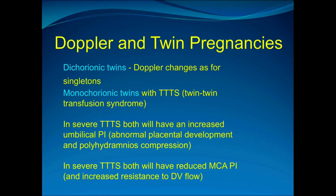In twin pregnancies: with dichorionic twins, the Doppler changes are the same as for singletons, making it a useful tool. With monochorionic twins and twin-to-twin transfusion syndrome, if it is severe, both twins will have an increased umbilical artery PI due to abnormal placental development and polyhydramnios with compression. In severe twin-to-twin transfusion syndrome, both will have reduced middle cerebral artery PIs and increased resistance to ductus venosus flow.